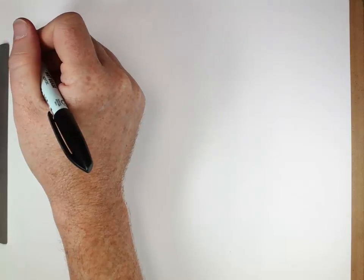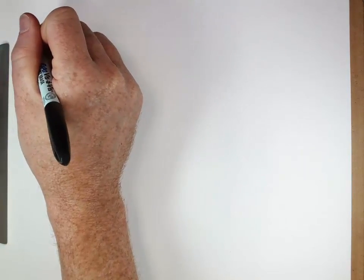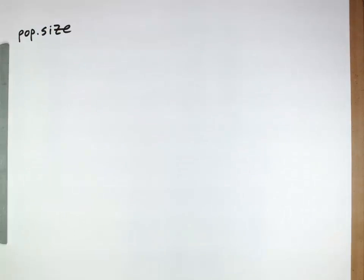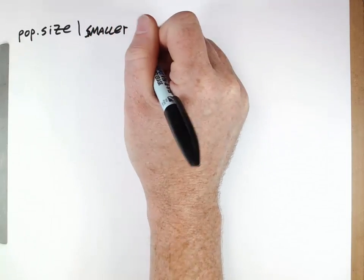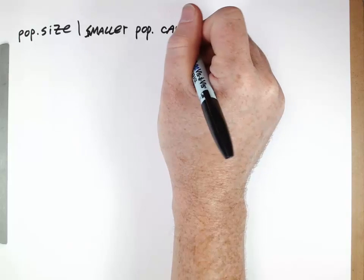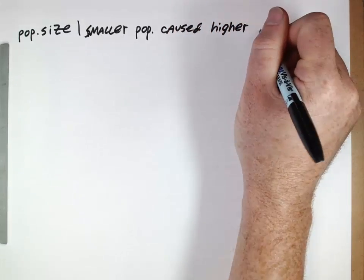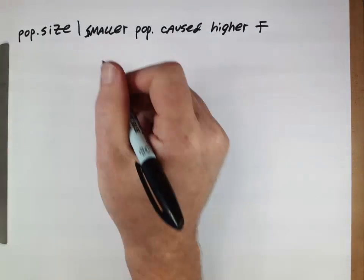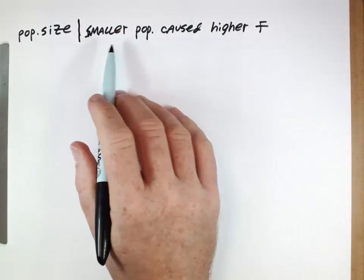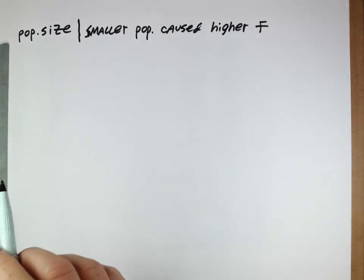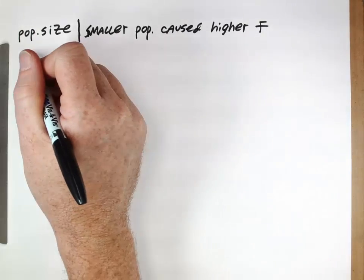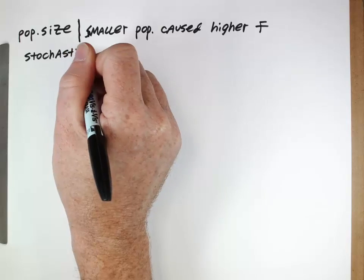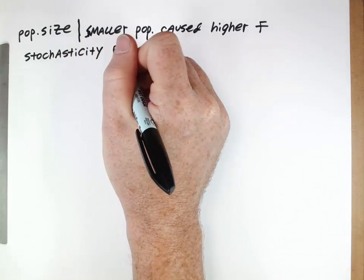Moving on to our next aspect of the Hardy-Weinberg equilibrium, we'll be looking at population size. Remember, the Hardy-Weinberg assumption was that population size was infinite. But we've actually already seen a little bit about the effect of population size, because smaller populations caused higher values of F. The small population resulted in unavoidable inbreeding. Now the second thing about population size is that stochasticity — randomness — becomes important.